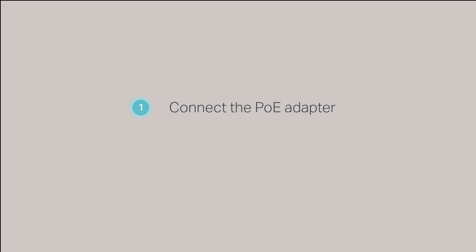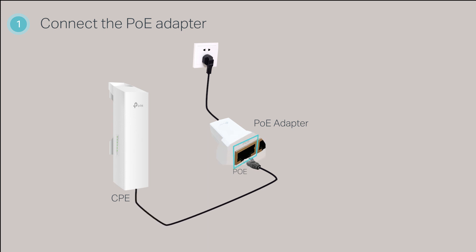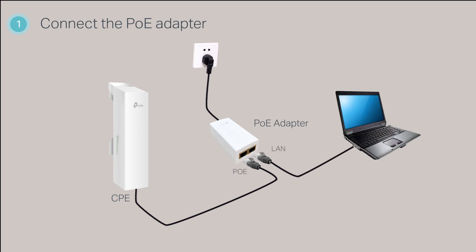Step 1, connecting the PoE adapter. TP-Link Faro CPEs are powered by PoE adapters. To power on the CPE, you will need to connect the power adapter to the power source and run an Ethernet cable from the PoE port on the adapter to the CPE. As the CPE with the default factory setting does not broadcast an SSID, you can only log into the CPE via a wired connection. Use another Ethernet cable to connect the computer to the LAN port of the adapter.